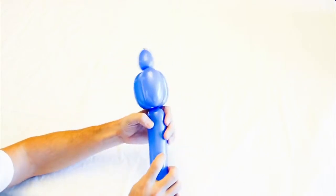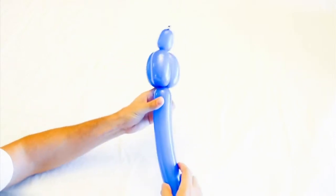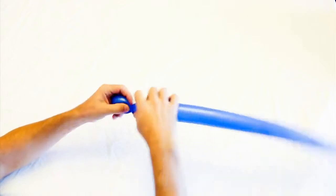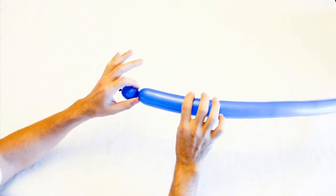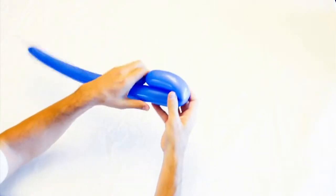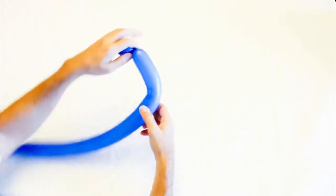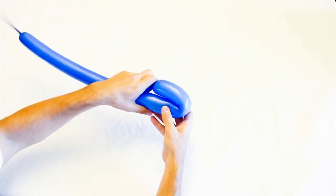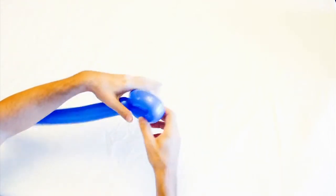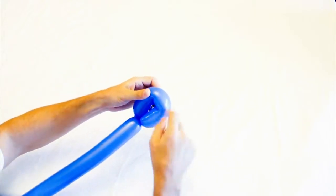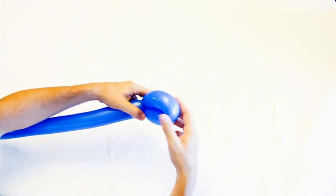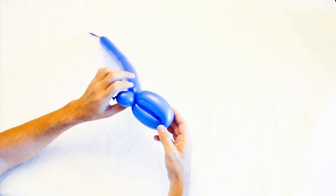That locks everything together, and that's called a three-bubble roll or a bird body. To do a loop twist, all you're going to do basically is fold the balloon. It's also called a fold twist because all you do is fold it and twist it together. It's kind of like a lock twist, only they're not locking stuff into place with more than one bubble. It's one bubble that forms a loop.